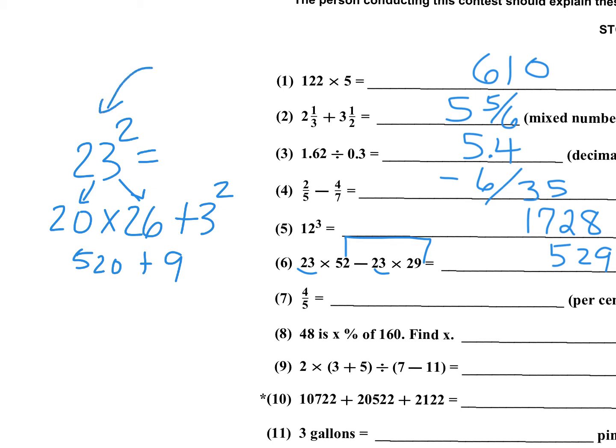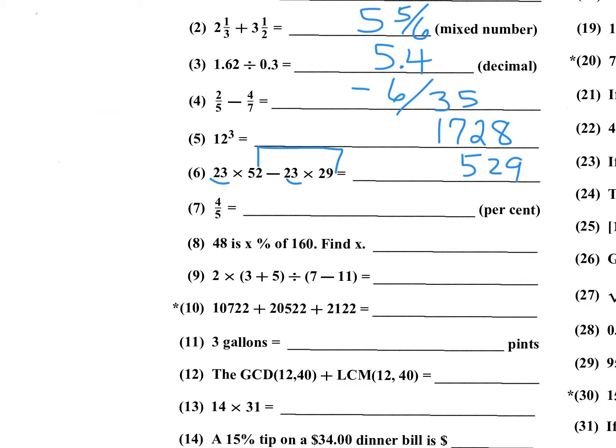Number 7: 4 fifths equals what percent? 4 fifths is 0.8, and they want the answer as a percent, so that's 80 percent. 4 out of 5 is 80 percent.